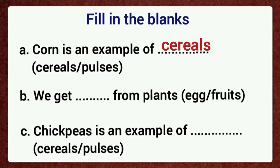Next one. We get dash from plants. Options: egg or fruits. What is the correct answer? We get fruits from plants.